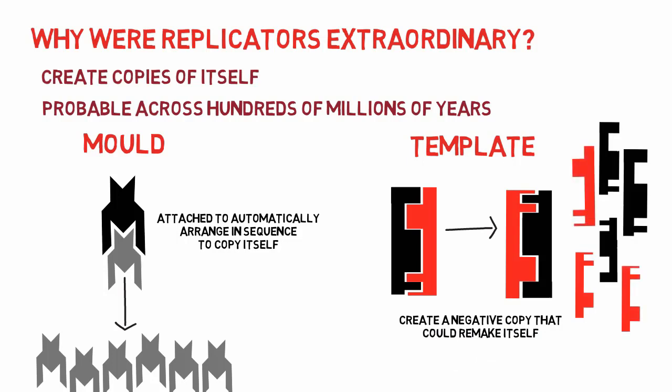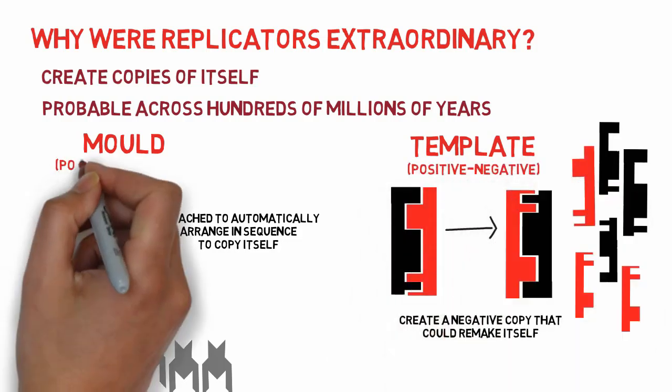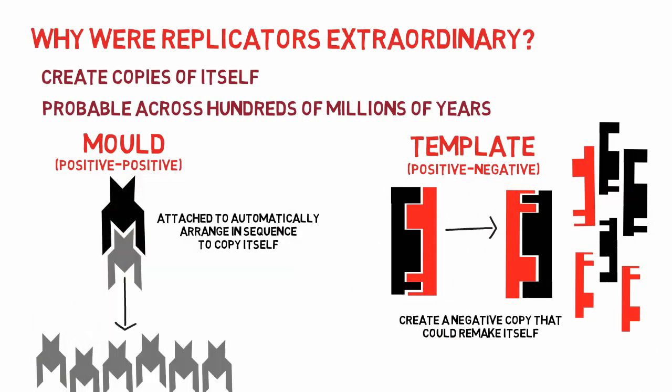We do not know if the original replicator was positive-negative (a template) or positive-positive (a mold), but modern replicators—the DNA—use positive-negative replication. The new replicator spread its copies rapidly through the sea and made other larger molecules more rare.